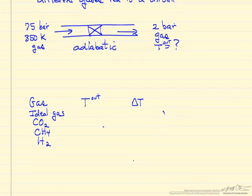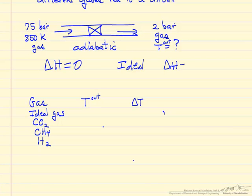If this were an ideal gas, the energy balance for a throttle shows there's no work done, there's no heat transferred if it's adiabatic, so delta H is zero. For an ideal gas, delta H is Cp delta T with constant heat capacity, so delta T is zero. That means we would leave at 350 Kelvin.